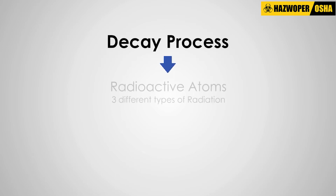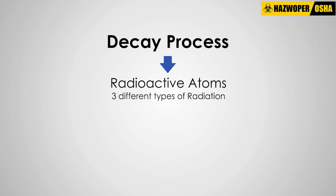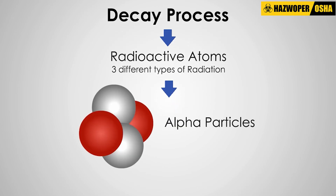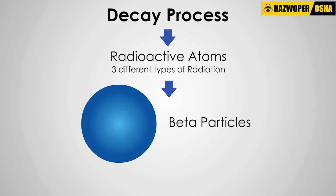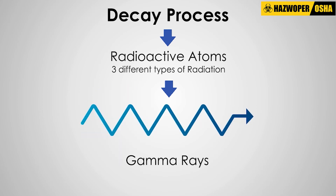During the decay process, radioactive atoms give off three different types of radiation: one, alpha particles; two, beta particles; and three, gamma rays.